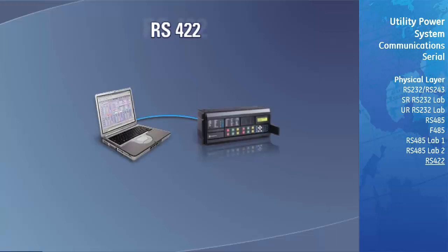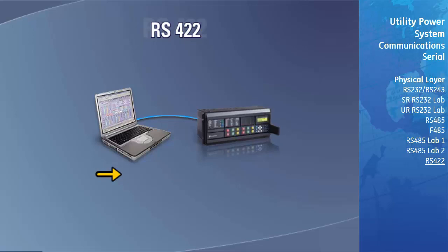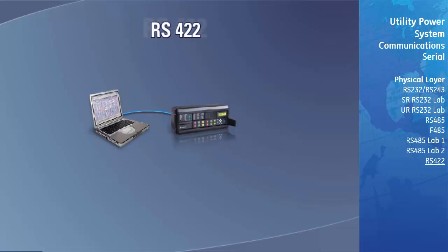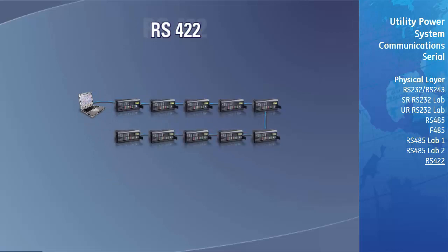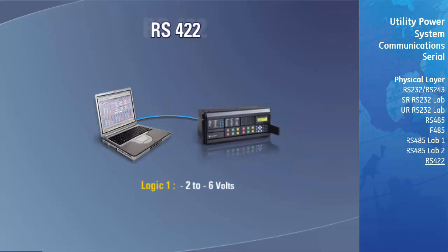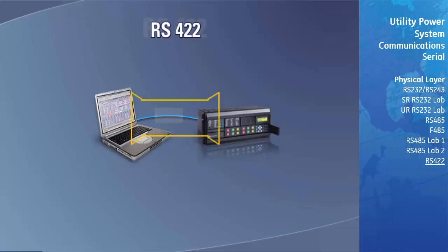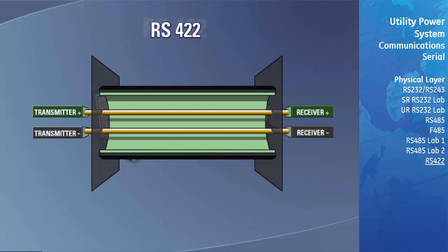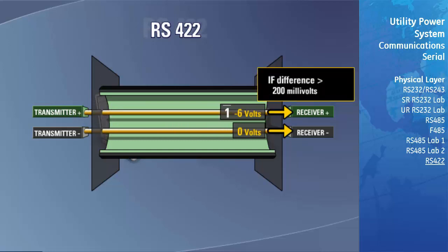The RS-422 standard was introduced in the early 1970s and is older than the RS-485 standard. Like RS-485, it is a differential system using two conductors. The major differences between RS-422 and RS-485 are: only one transmitter or driver is permitted on the network, though there are many RS-422-like LANs that break this rule; up to 10 line receivers are permitted on the LAN; and the driver's output for a logic 1 is between minus 2 to minus 6 volts DC, while a logic 0 is between plus 2 to plus 6 volts DC. As with RS-485, receivers measure the voltage difference between the two conductors, and as long as the magnitude of the signal is greater than 200 millivolts, the receiver can determine the logic state being transmitted.